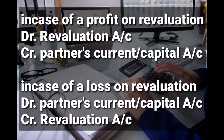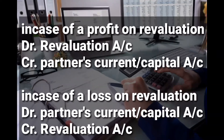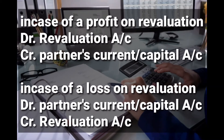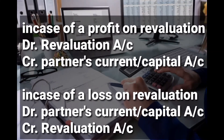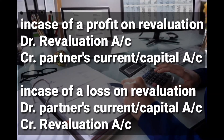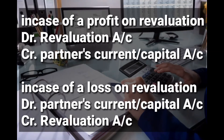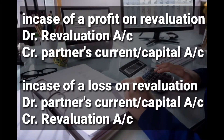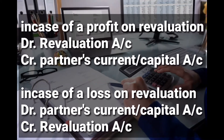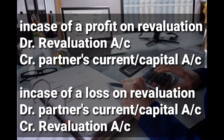In case of a profit on revaluation, when we get a profit on revaluation it means that the credit side is greater than the debit side on the revaluation account. So in case of a profit on revaluation, we debit the revaluation account and we credit the partner's current or capital account, because the profit has to be shared by the partners. When the partners receive profits, their capital or current account is increasing, so we credit it.